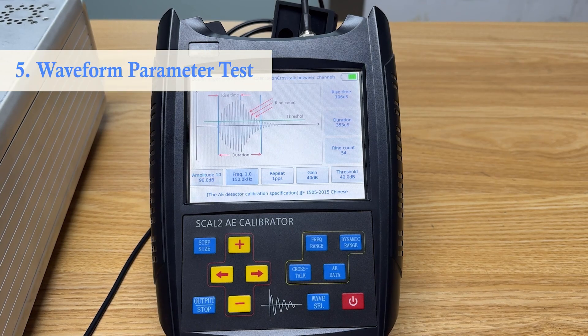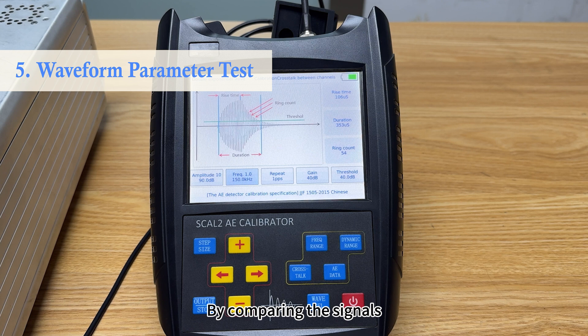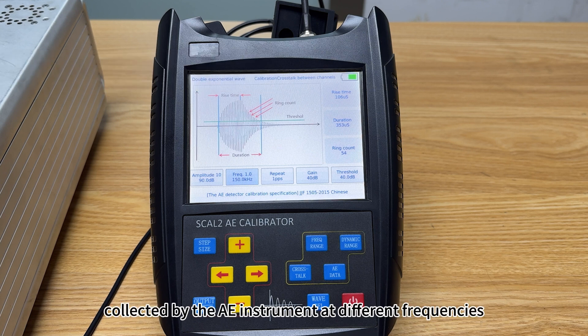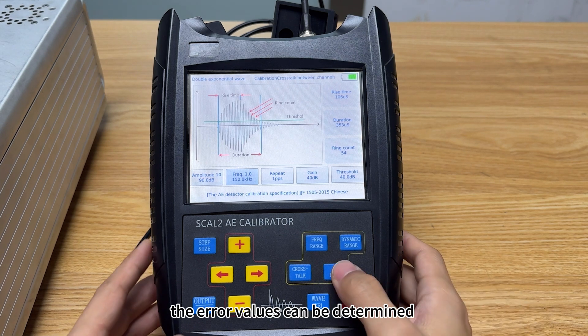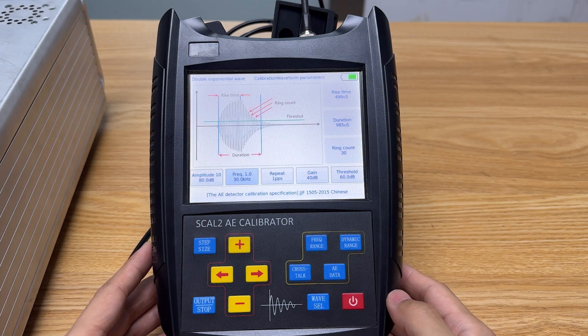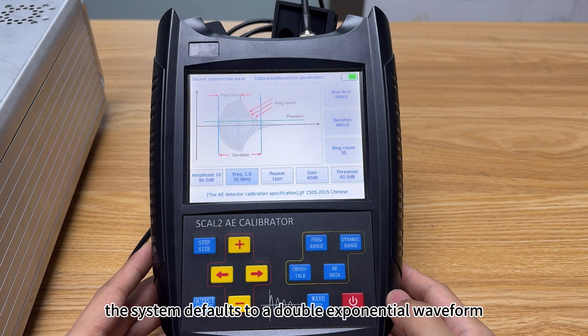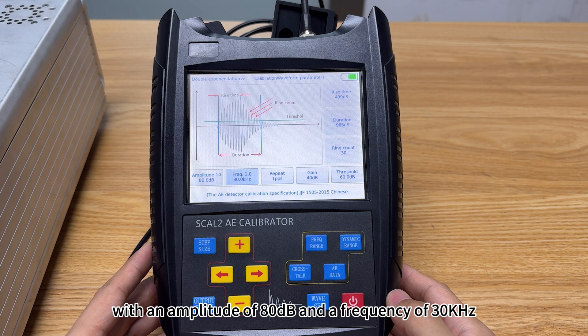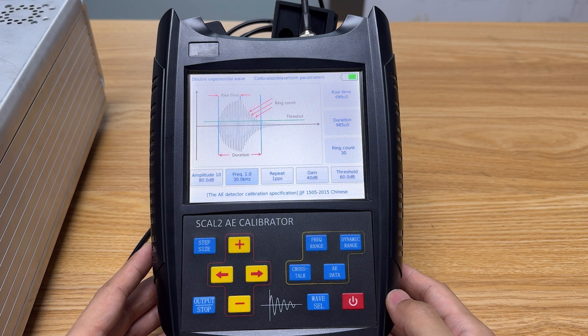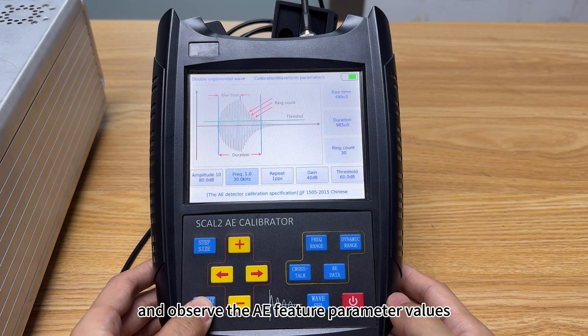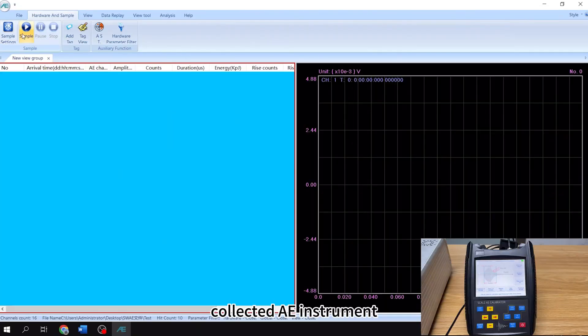Waveform Parameter Test. By comparing the signals collected by the AE instrument at different frequencies with the standard signals output by SCAL-2, the error values can be determined. Press AE Data. The system defaults to a double exponential waveform with an amplitude of 80 dB and a frequency of 30 kHz. The screen displays the AE feature parameters for this waveform condition. Press output and observe the AE feature parameter values collected by AE instrument.